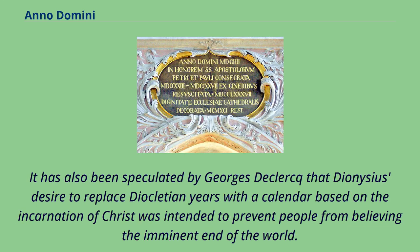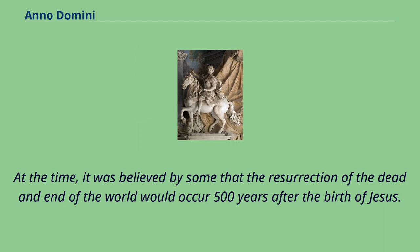It has also been speculated by Georges de Klerk that Dionysius' desire to replace Diocletian years with a calendar based on the Incarnation of Christ was intended to prevent people from believing the imminent end of the world. At the time, it was believed by some that the resurrection of the dead and end of the world would occur 500 years after the birth of Jesus.